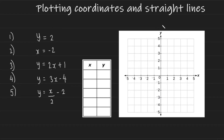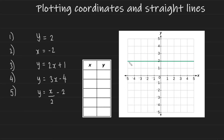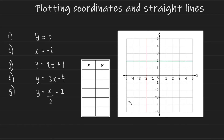Now we're going to be plotting straight lines. We have five equations of straight lines on the left-hand side here. Our first one is y is equal to two. If you ever get an equation like this, where you just have a variable on one side and a number on the other, what this means is that no matter what your x value is, your y value is always going to be two — giving you a horizontal line where y is two. The second equation gives a vertical line where x is always negative two, and it looks like this red line here.